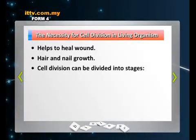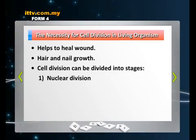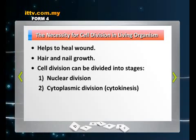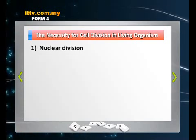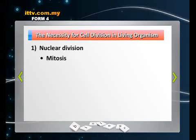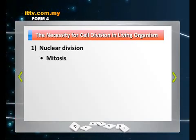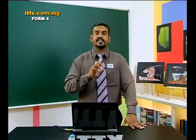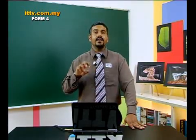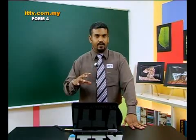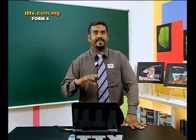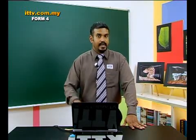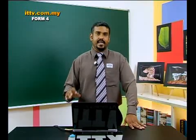Cell division is divided into two stages. One is known as the nuclear division and the other is the cytoplasmic division. The nuclear division has two types, namely mitosis and meiosis. Throughout our lesson, we will be learning and focusing more on mitosis and meiosis. At the end of mitosis and meiosis, there is a cytoplasmic cell division which occurs, also known as cytokinesis.